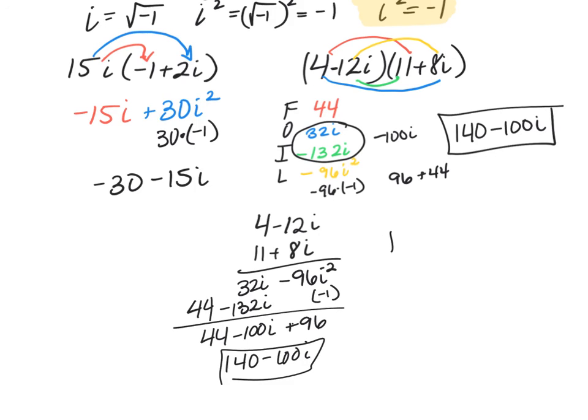So those are two methods for multiplying. You don't have to do both. You're just picking one.